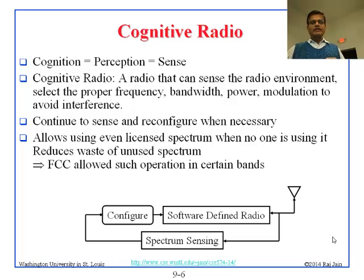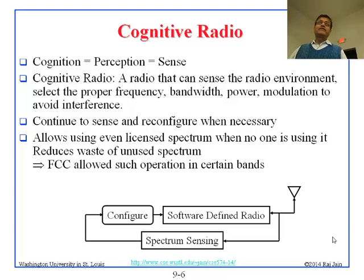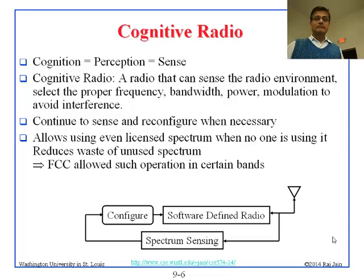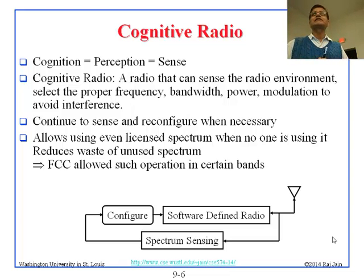The idea came about that we can use the spectrum even if it is licensed by somebody, if they are not using it. Why waste it? Spectrum is such an expensive and useful resource that if somebody licensed it and did not use it, we can use it. Somebody brought this idea to the FCC and FCC allowed it, opening up certain licensed frequencies for general use.